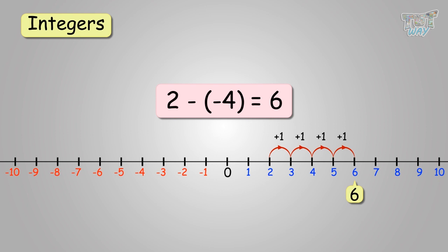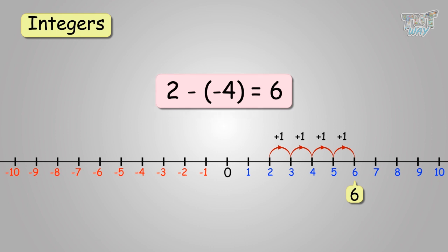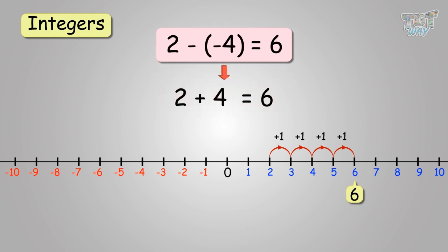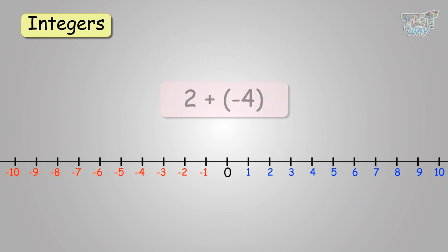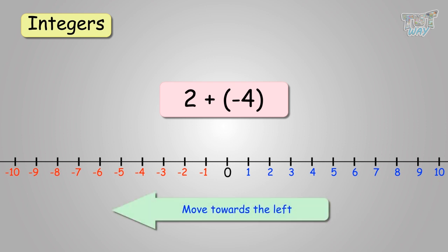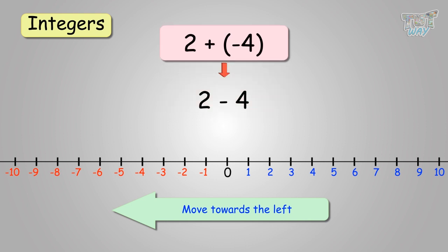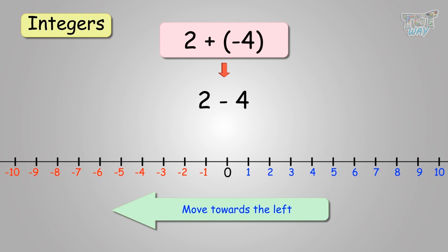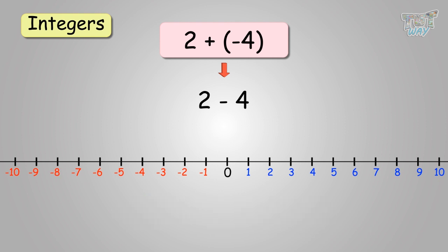So, notice: whenever you have two negative signs together, we replace them with a plus sign. So, this can be rewritten as 2 plus 4 equals 6. Now, we have to add negative 4 with 2. We learned that when adding a negative number, we have to move towards the left, so we subtract. 2 plus negative 4 is 2 minus 4. Moving 4 places from 2 towards the left.